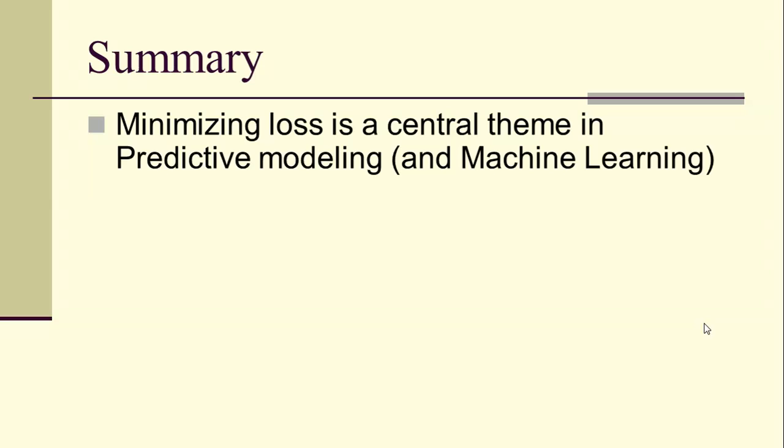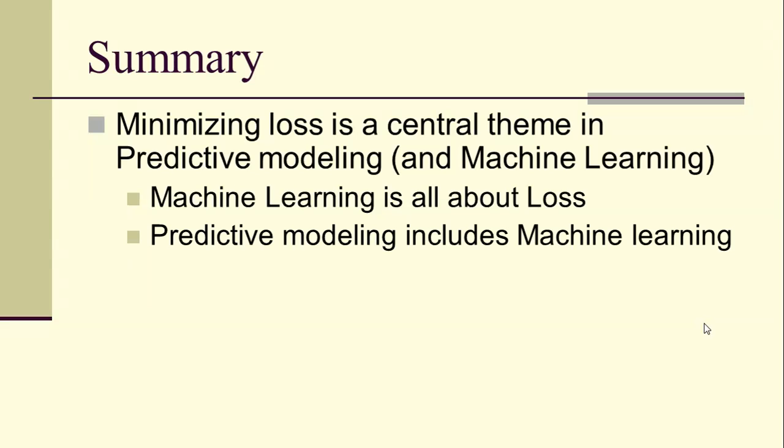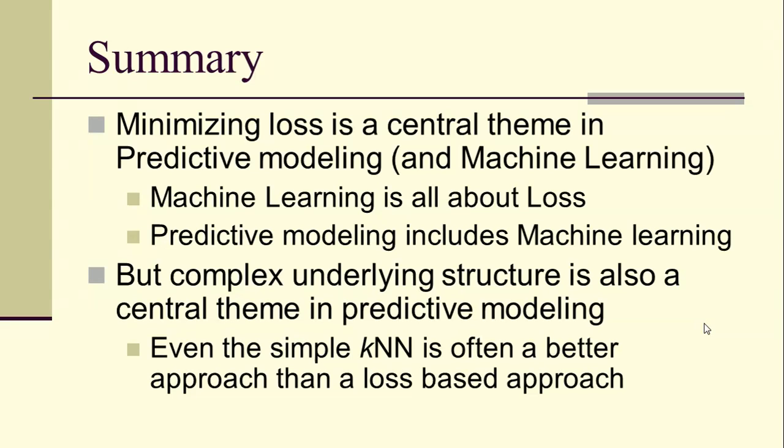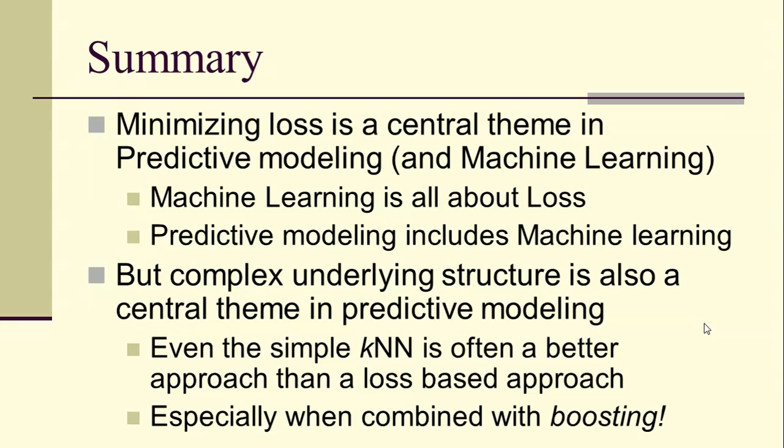So minimizing loss is a central theme in predictive modeling and machine learning. Machine learning is really all about loss, and predictive modeling includes machine learning. But complex underlying structure is also a central theme in predictive modeling. Even a simple k-nearest neighbor networks is often a better approach than a loss-based approach, especially when we combine it with boosting, which is what we look at next.